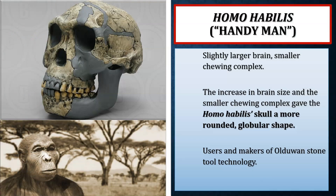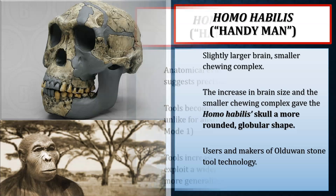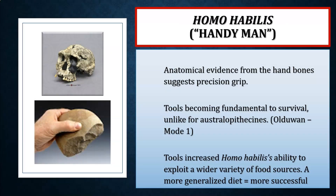Homo habilis has the nickname 'the handyman' because it is believed to be the very first species that relies heavily on stone tool culture. While later australopithecines may have used stone tools, with Homo habilis and onward we see a commitment to and reliance upon tools for survival. Homo habilis has a slightly larger brain size and smaller chewing complex, giving the skull a more rounded, globular shape. We also see anatomical evidence from hand bones suggesting a precision grip, critical for both the use and manufacture of stone tool technologies.